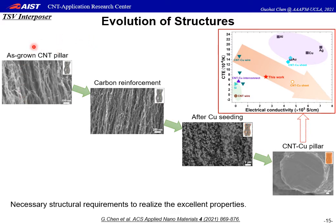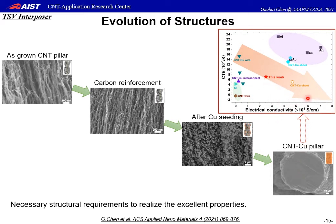It is very important that the CNT assembly should possess a porous structure for copper deposition. Our super-growth CNT forest can achieve a well-ordered, highly porous structure. In order to maintain the shape of pillars and meet the vertical requirement for the later insertion process, a small amount of carbon coating was deposited to reinforce the forest structure. Then, a two-step copper electrodeposition process was used to deposit copper into the CNT forests. After the first copper step, well-distributed copper seeds can be observed throughout the bulk of the pillars.